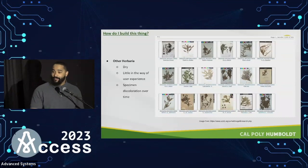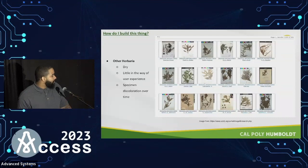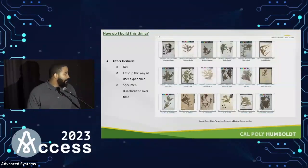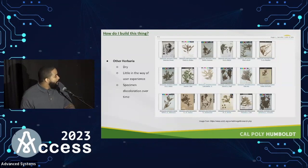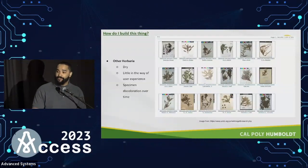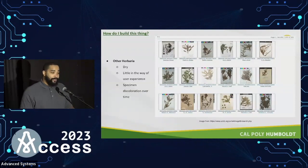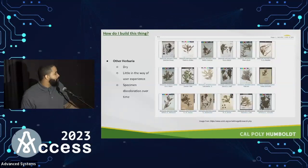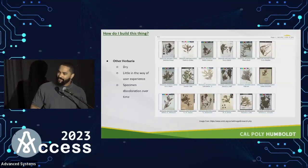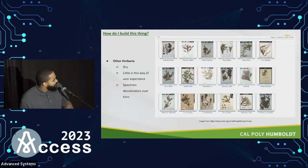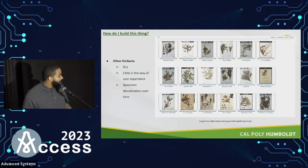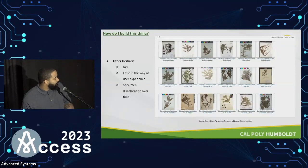One of the first things I did was look at other herbaria online. This is a typical digital herbarium — this is from CCH2, the California Consortium of Herbaria. It's basically a big online database of herbarium images. They're very dry, with not much in the way of user interface. There's also the major issue of specimen discoloration over time. Searching for sequoia sempervirens — those are redwood needles — and as you can imagine they're green originally, but many are not. They lose color, which is a huge flaw of typical digital herbaria.